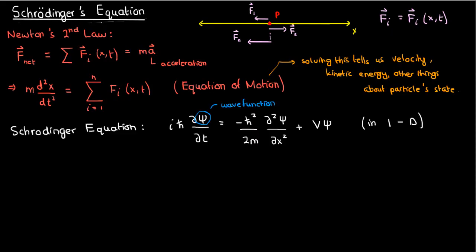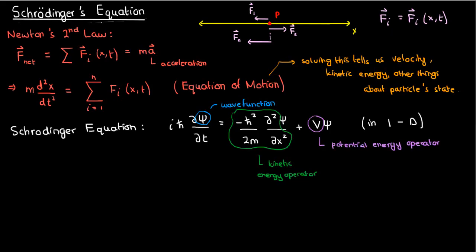Although Schrödinger's equation looks really complicated, the terms aren't very difficult to understand. The first term on the right-hand side represents the kinetic energy operator on the wave function, while the second term represents the potential energy operator. In quantum mechanics, you generally don't get fixed numerical values for kinetic and potential energy — you need to perform operations on the wave function to extract those values, and that's what these operators do. So you can think of Schrödinger's equation as a statement of energy conservation: kinetic energy plus potential energy on the right-hand side equal the total energy on the left-hand side.